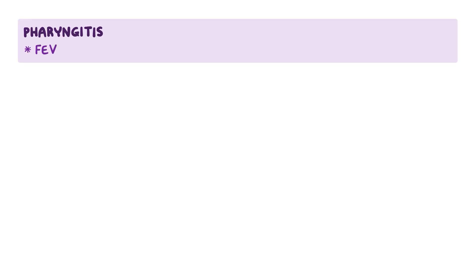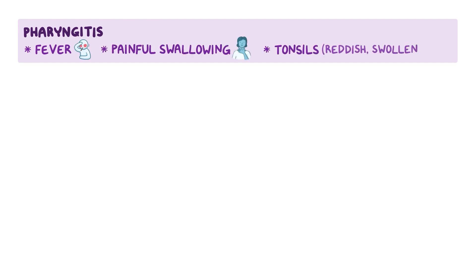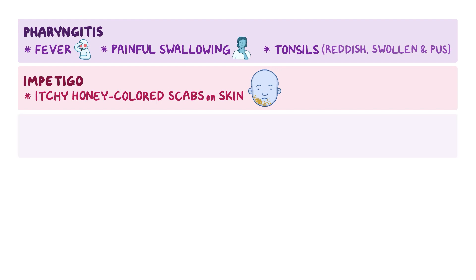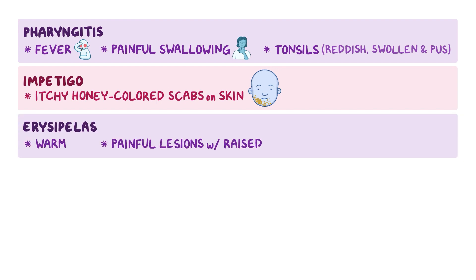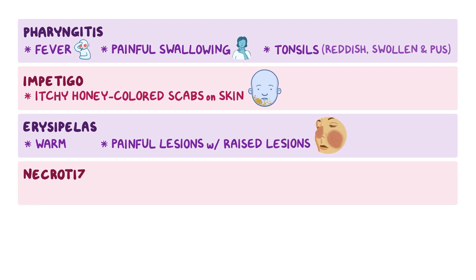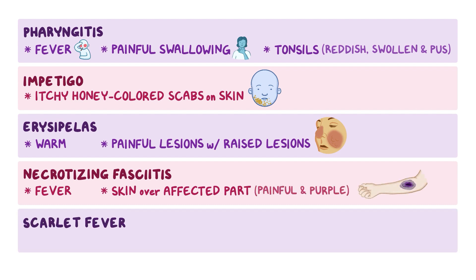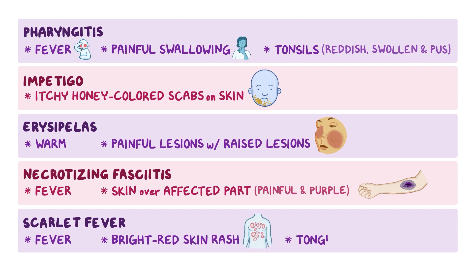Symptoms depend on the particular infection. With pharyngitis, there is fever, painful swallowing, and the tonsils look reddish and swollen, and there might be pus on them. With impetigo, there are itchy, honey-colored scabs on the skin which can become fluid-filled blisters. With erysipelas, there are warm and painful lesions on the skin with raised edges. With necrotizing fasciitis, there's fever and the skin over the affected part becomes painful and purple-colored. With scarlet fever, there's fever, a bright red skin rash, and sometimes the tongue has a sandpaper feel.